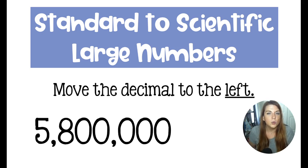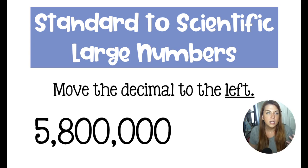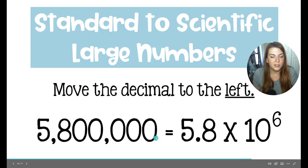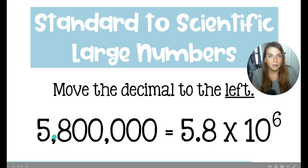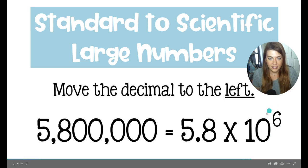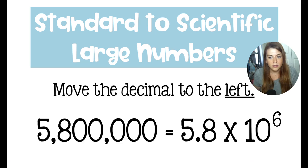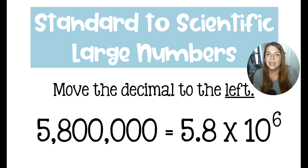If you are in standard notation and need to get into scientific notation with a big number, you're going to move your decimal to the left in order to get your coefficient between one and 10. We would move the decimal — which is not written, but it's really back here — six places to get it between the five and the eight. Because we're working with a large number, that is a positive exponent. So 5,800,000 is 5.8 times 10 to the sixth. You move the decimal six times. Times 10 to the sixth does not indicate six zeros — it indicates six decimal moves.